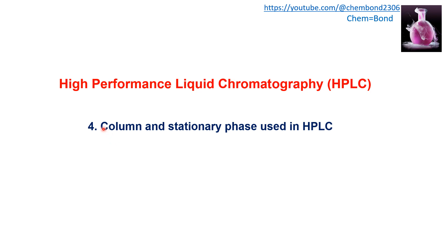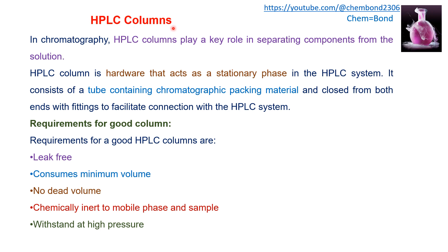This lecture covers the fourth component of HPLC instrumentation: the column and stationary phase. An HPLC column is hardware that acts as a stationary phase in the HPLC system. It consists of a tube containing chromatographic packing material, closed from both ends with fittings to facilitate connection with the HPLC system.